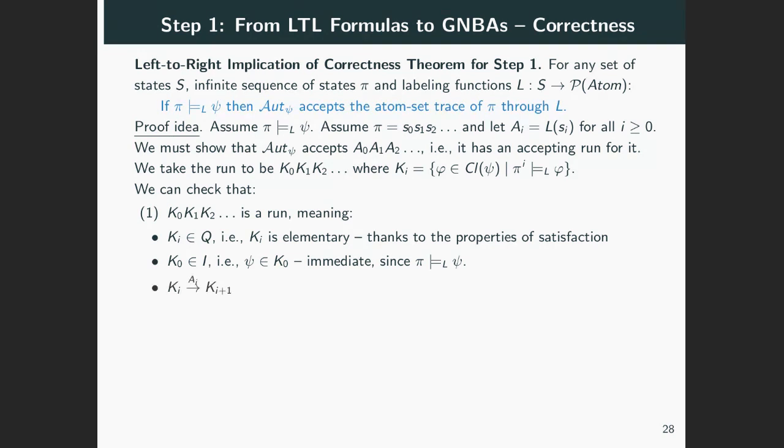Finally, for a run, we need to check that Kᵢ transits through Aᵢ to Kᵢ₊₁. And this can be checked from the properties of formula satisfaction, also using the expansion laws for always, eventually, and until. Remember that the transition relation between scenarios was defined keeping in mind the properties of satisfaction when moving from one state to the other. As a general rule, if you follow the previous discussion about why the automaton's components were defined the way they were, this proof will be understandable. The definitions were essentially chosen so that this proof will go through.